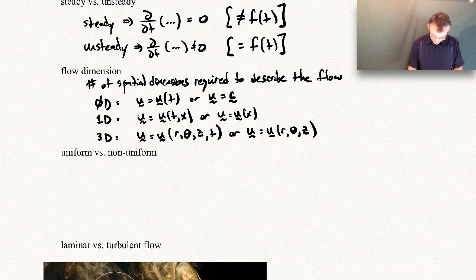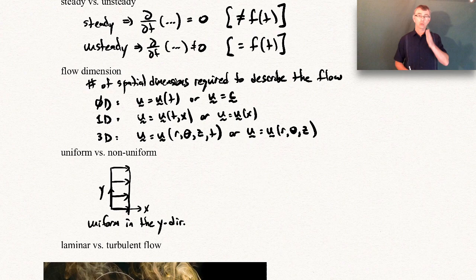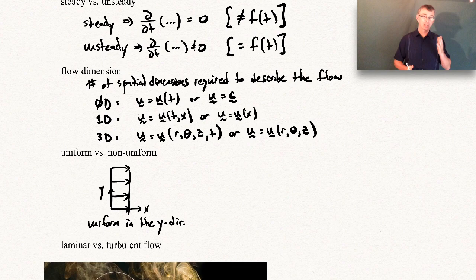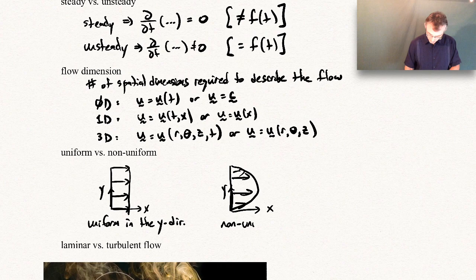Uniform versus non-uniform describes whether the flow varies in a particular direction. For example, a velocity field that shows no variation in the y direction is uniform in y — it's constant in that direction. Non-uniform means it does vary in that direction. You'll frequently hear phrases like 'the flow is uniform in the z direction' or 'uniform in the x direction.'